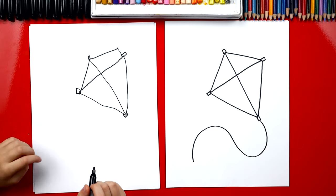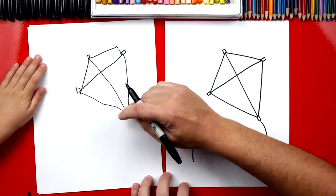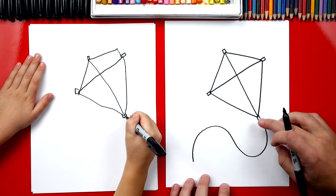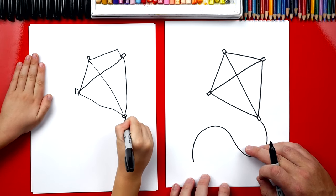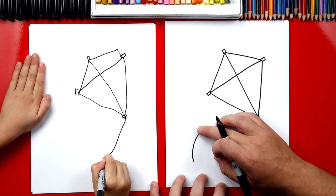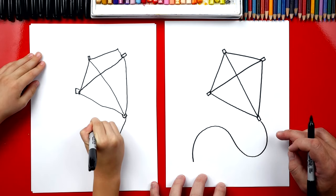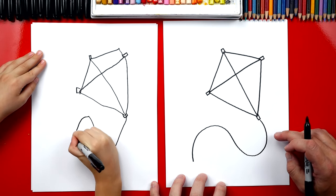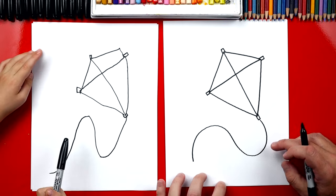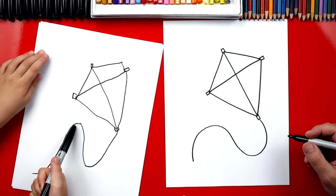This kite's up in the air. So let's draw a snake line, an S line that curves down. Curve down, back up, and then back up, and then back down. Cool. Good job. That's a really long kite tail. I like it.